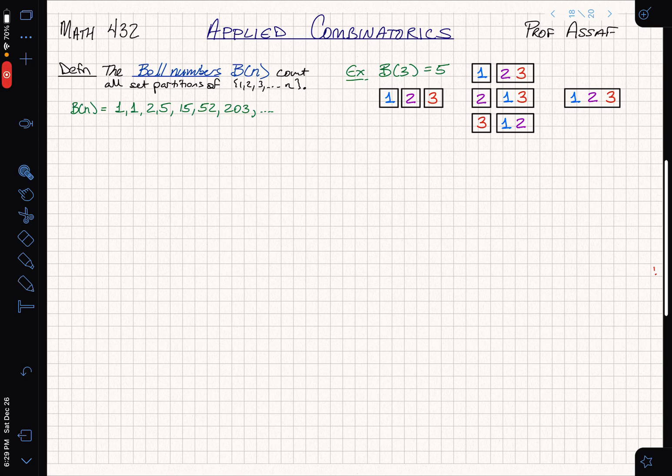We were just talking about the Bell numbers, which are the number of set partitions of 1 up to n of any size. For example, we computed that B(3) is 5 because there are 5 set partitions of the numbers 1, 2, and 3.